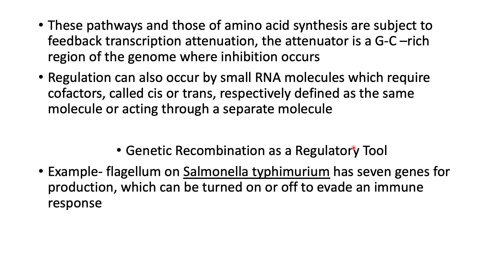These pathways and those of amino acid synthesis are subject to feedback transcription attenuation. The attenuator is a GC-rich region of the genome where inhibition occurs. Regulation can also occur by small RNA molecules which require cofactors defined as cis, acting on the same molecule, or trans, acting through a separate molecule. As genetic recombination is a regulatory tool, one example is the flagellum on Salmonella typhimurium, which has seven genes for production that can be turned on or off to evade an immune response.